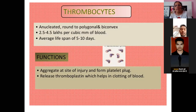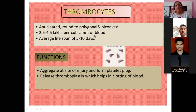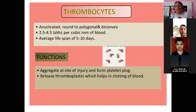Thrombocytes are important for clotting purposes and are anucleated — they have no nucleus. They are round to polygonal and bi-convex in shape. The normal count is 2.5 to 4.5 lakhs per cubic mm of blood. The average lifespan of platelets is 5 to 10 days, after which they are destroyed.